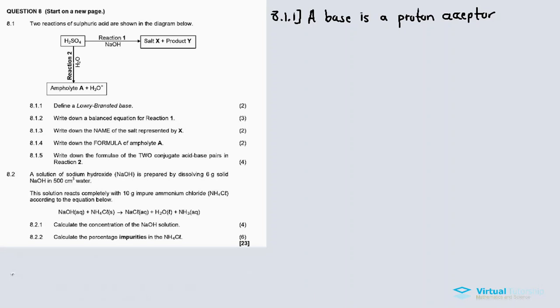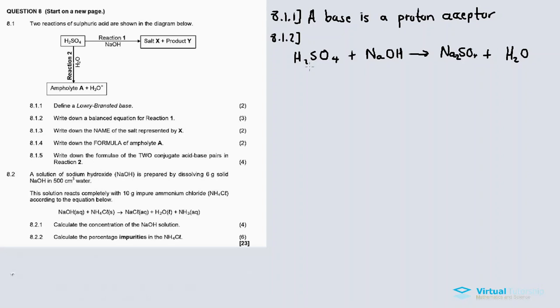The reaction is between sulfuric acid and sodium hydroxide. Because it is a neutralization process, the H⁺ from the acid and the OH⁻ from the base form water. The sodium (Na) and the sulfate (SO₄) combine to form the salt sodium sulfate, since the hydrogen and the OH have given us water.